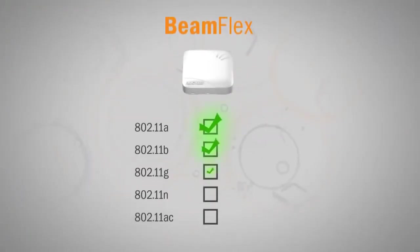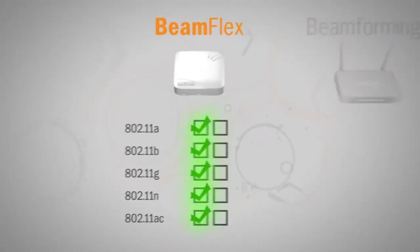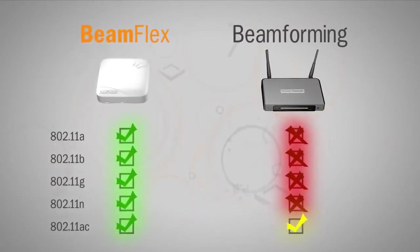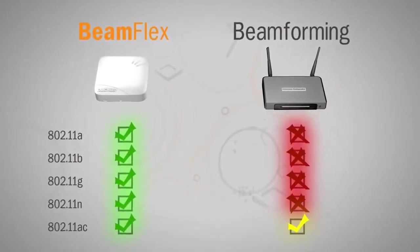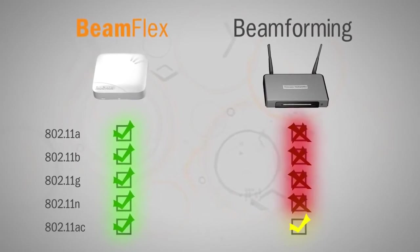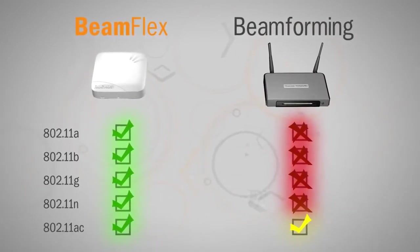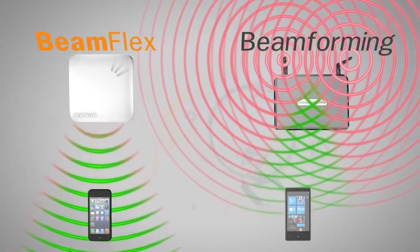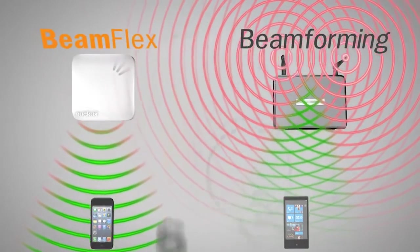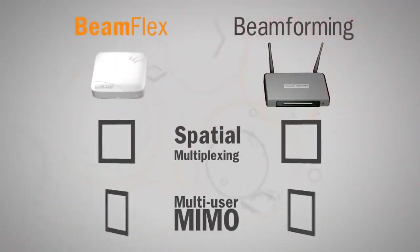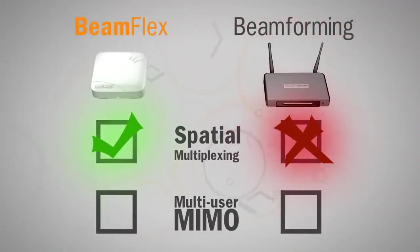One of the greatest benefits of BeamFlex is that it's inherently compatible with all Wi-Fi technologies. On the other hand, transmit beamforming only provides mild gains in very specific situations. It's only supported by a limited subset of clients and it does very little to reduce Wi-Fi noise. In addition, the ability to use throughput enhancing techniques such as spatial multiplexing and multi-user MIMO are in direct conflict with the use of transmit beamforming.